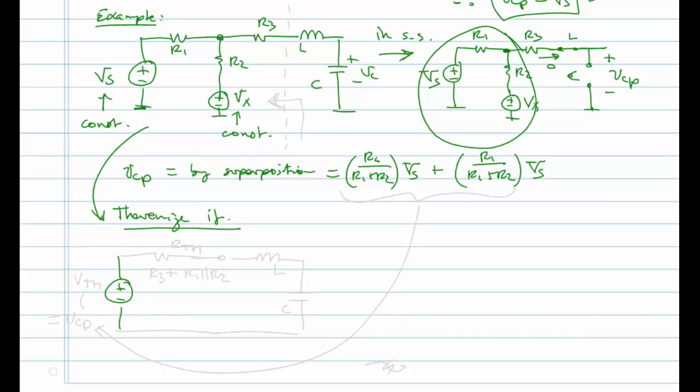I'll have a Thevenin voltage source and a Thevenin resistance, and then I have my L and my C. What would be my Thevenin resistance? Well, I'm going to draw a dotted line here and I'm looking back in here. What do I see if I turn off the voltage sources, the independent sources, what resistance do I see? Well, I see R3 and then I see R1 and R2 in parallel. And that's it.